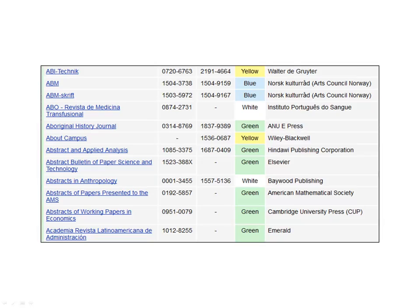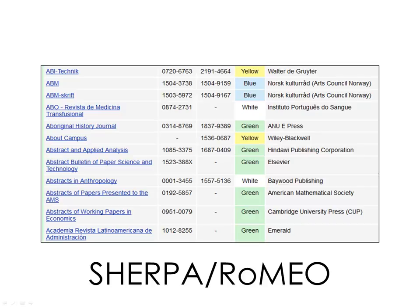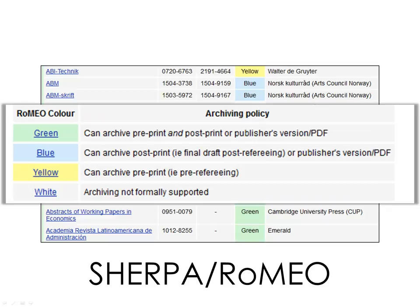Just to confuse everything, Sherpa Romeo — which is a tool that helps track publisher archiving policies, i.e., a tool for helping achieve green open access — uses similar colors to categorize publishers' policies. But these colors are less likely to come up in general open access discussions.